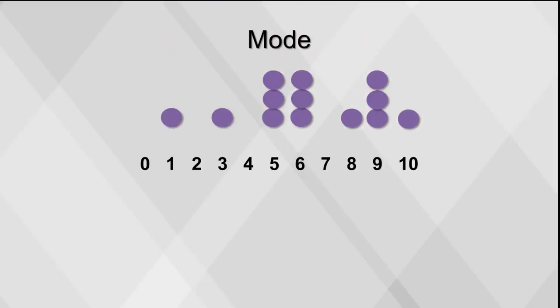The mode is the value that occurs most frequently. It is only useful when we have some values clustering together. In this example, the mode is 9. There may be no mode, or there may be several modes.